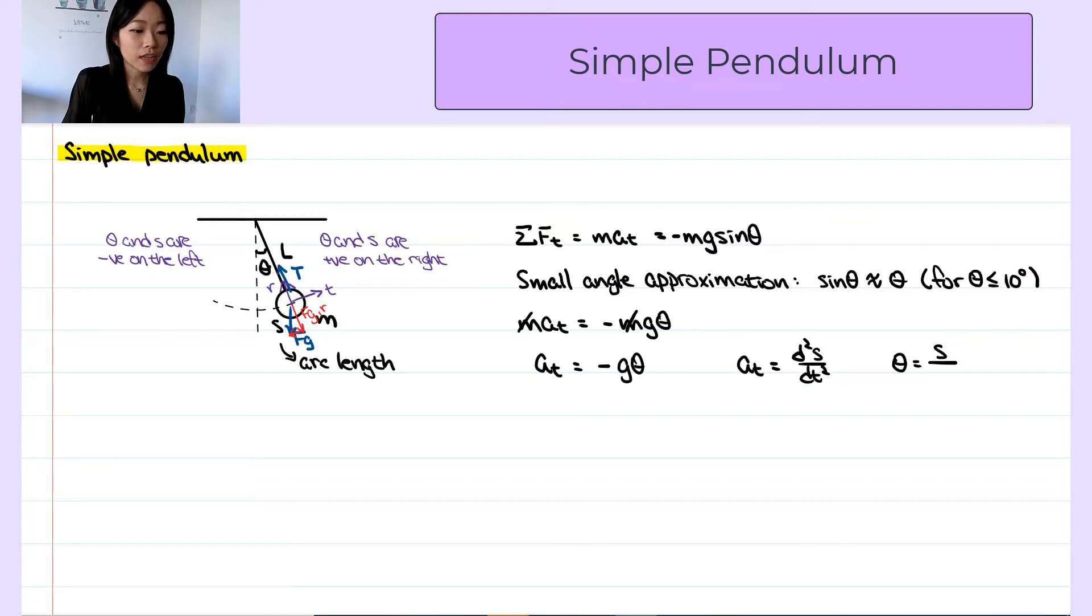Here the radius would be the length of the string, l. So second derivative of s is l times second derivative of theta.